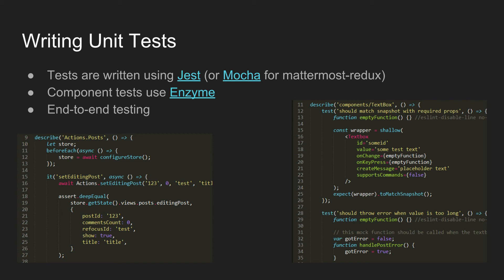Last but not least — unit tests, a very important part that we've slacked on and are hoping to improve greatly. The tests in the web app are written using Jest; the ones in the Redux and mobile repositories use Mocha. Hopefully we'll get those unified at some point, but for now they're pretty similar. The setup is straightforward: you set up the initial state, run some Redux actions or functions, and check the output state.